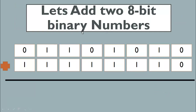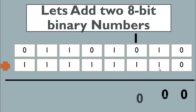Let's check another example — adding two eight-bit binary numbers again. Zero plus zero gives zero. One plus one is two, so zero sum and one carry. Again zero sum and one carry. Here we get three, and the binary of three is one-one, so one is sum and one is carry.